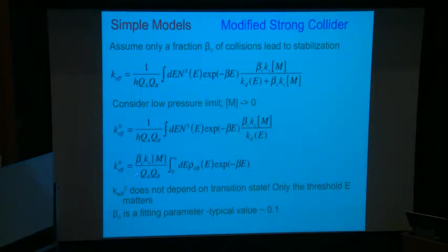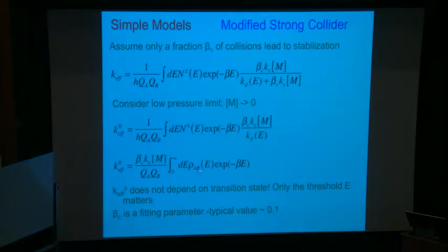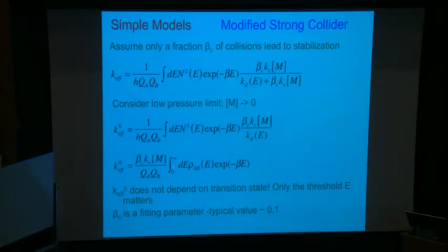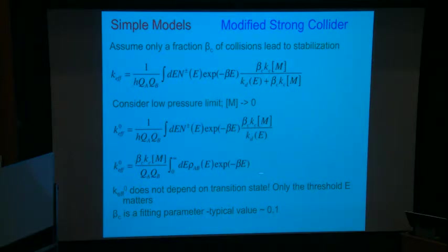Looking at the low pressure limit, you get a direct dependence on this empirical β_c parameter telling you what fraction of collisions are stabilizing. You're also dependent on the density of states of the complex, integrated starting from the dissociation threshold. The key insight is that in the low pressure limit there is zero dependence on the transition state — all that matters is the density of states at the dissociation energy and your rates of going up and down in energy. So if you're doing a low pressure rate measurement, you can't possibly learn anything about a transition state.